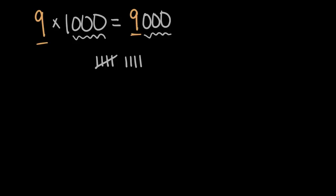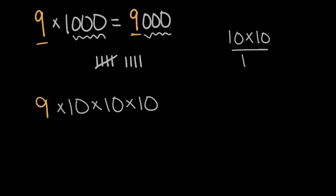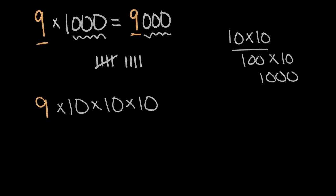We can think about this in terms of tens. We've worked out why multiplying by 10 adds a zero, so let's think about 1,000 in terms of tens. 1,000 is equal to 10 times 10 times 10. 10 times 10 is 100, and 100 tens is 1,000. So instead of 1,000, we can write 10 times 10 times 10 — these are equivalent. When we multiply a number times 10 we add a zero, but here we're multiplying by three tens, so we add three zeros.